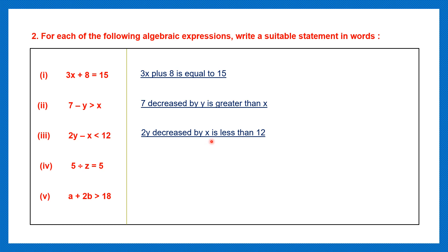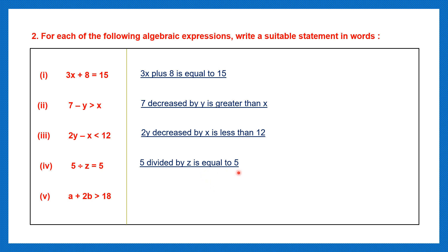Next one: 2y decreased by x is less than 12. Or you can say '2y minus x is less than 12' — you can use the word minus also. Fourth one: 5 divided by z is equal to 5. Fifth one: a plus 2b is greater than 18. Or you can say 'the sum of a and 2b is greater than 18.'